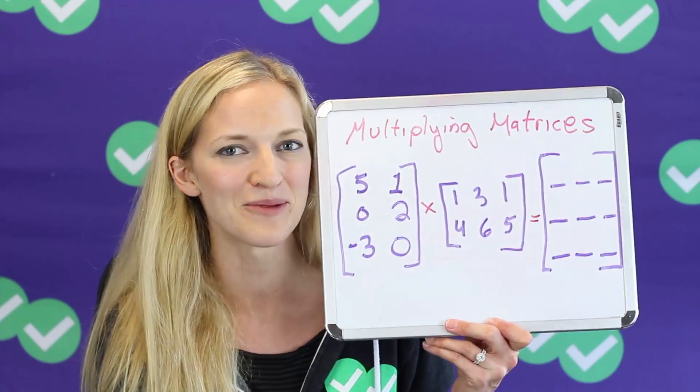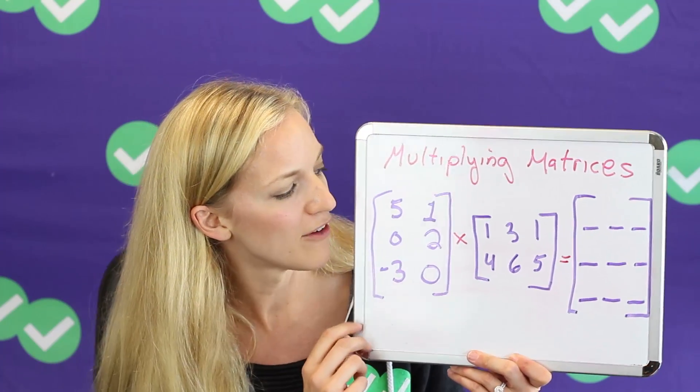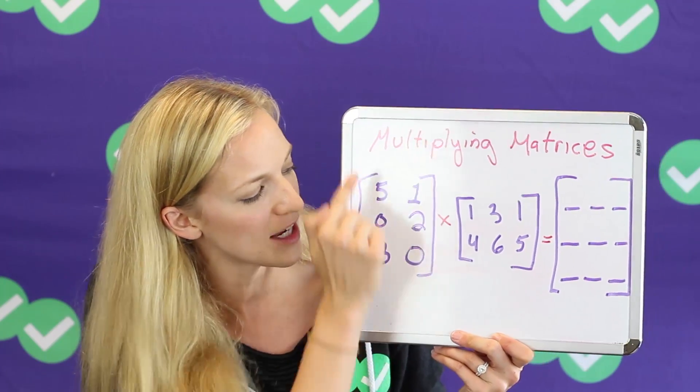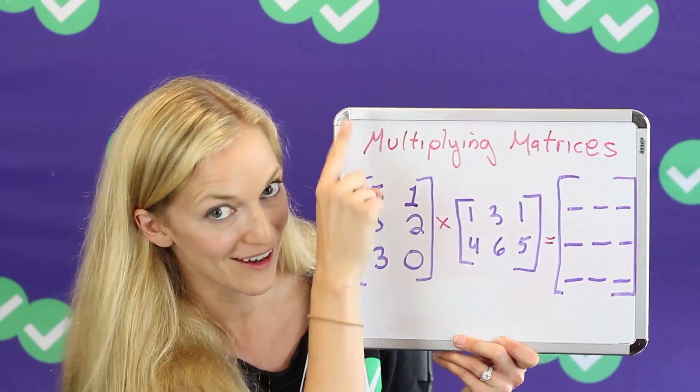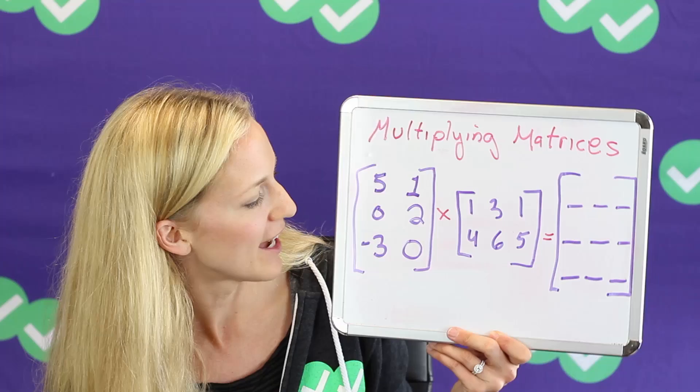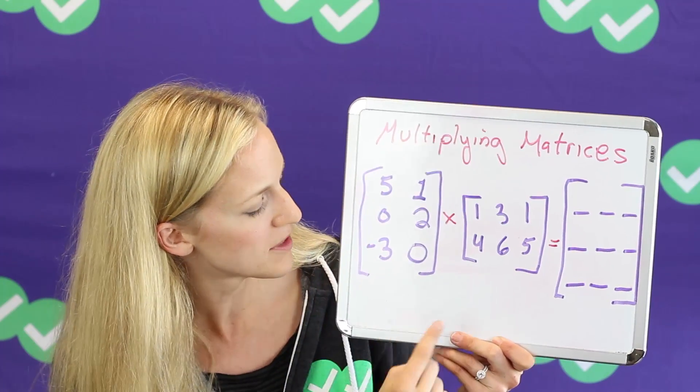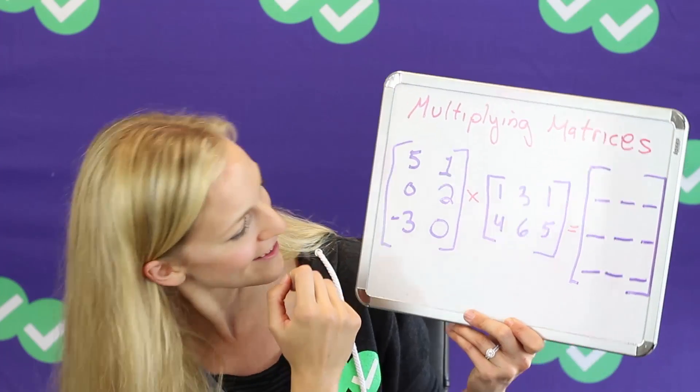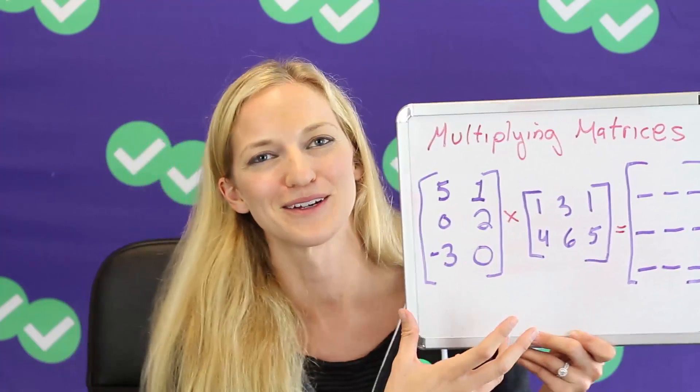All right, I saved the trickiest for last: multiplying matrices. Okay, so when you are multiplying matrices, it's different than adding matrices. The first matrix needs to have the same number of columns as the second one has rows. So we have this matrix has two columns, and this has two rows. Yes, got that right. Two columns, two rows. So we're basically switching up the pairs here.